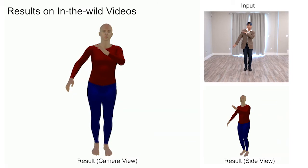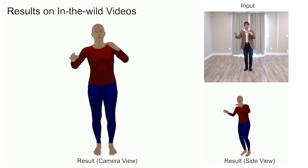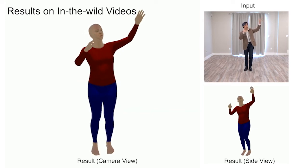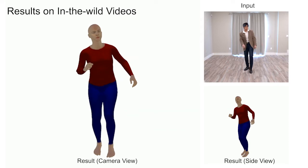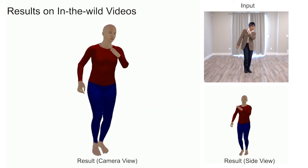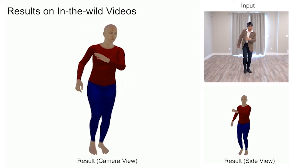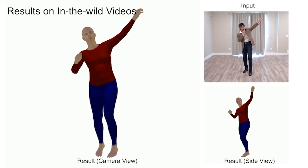In the following, we present our results on in-the-wild videos from the internet. Given the body bounding box of the first frame, for the following frames, we update the bounding box according to the 2D keypoint detection of the previous frame. In this way, our method captures the complete body fully automatically.